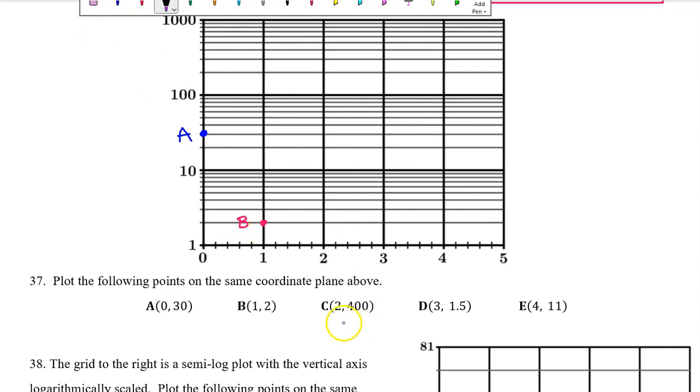Moving on to point C (2, 400). So this is going to take us past 100. As you pass 100, you begin to count by hundreds. So this is 100. The next line is 200, and then 300, and then 400 will be right here. So this is point C.